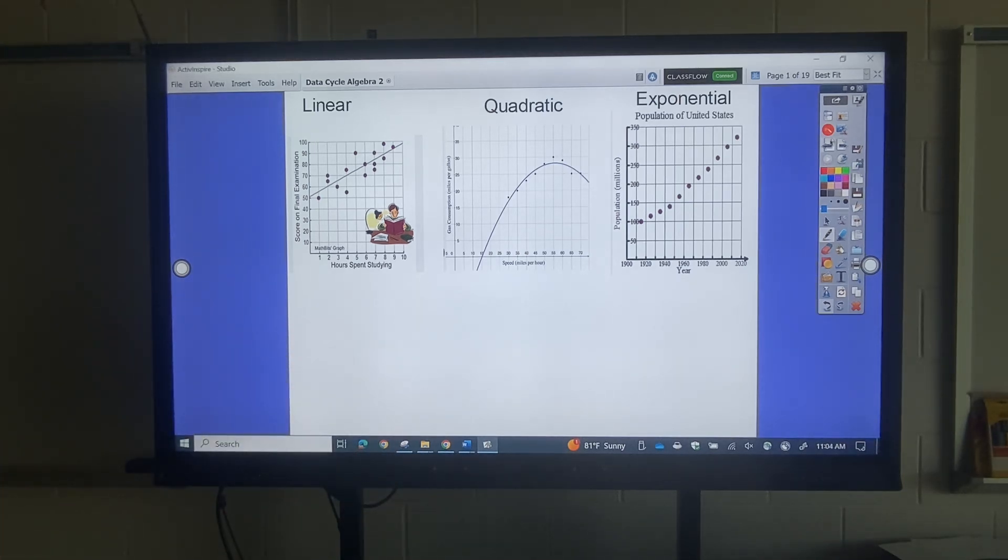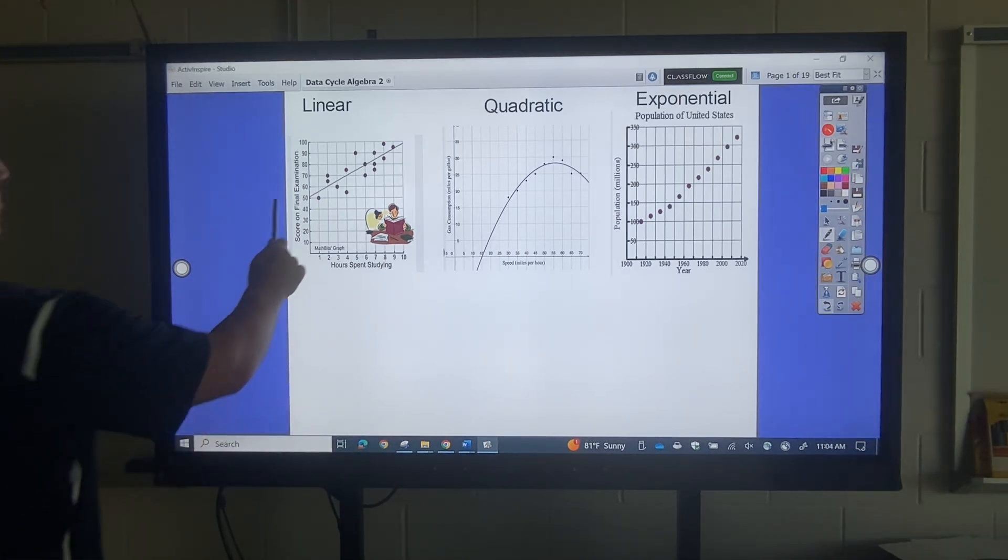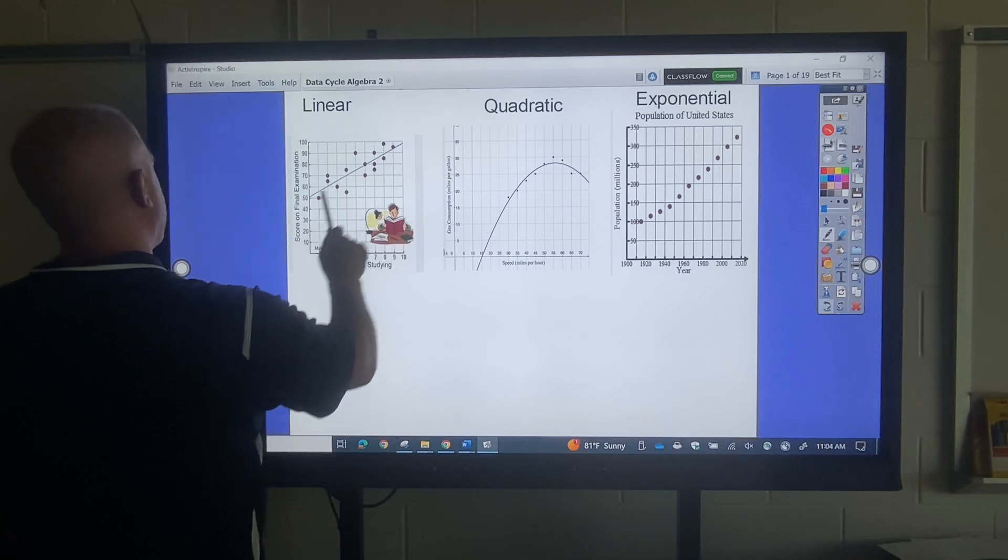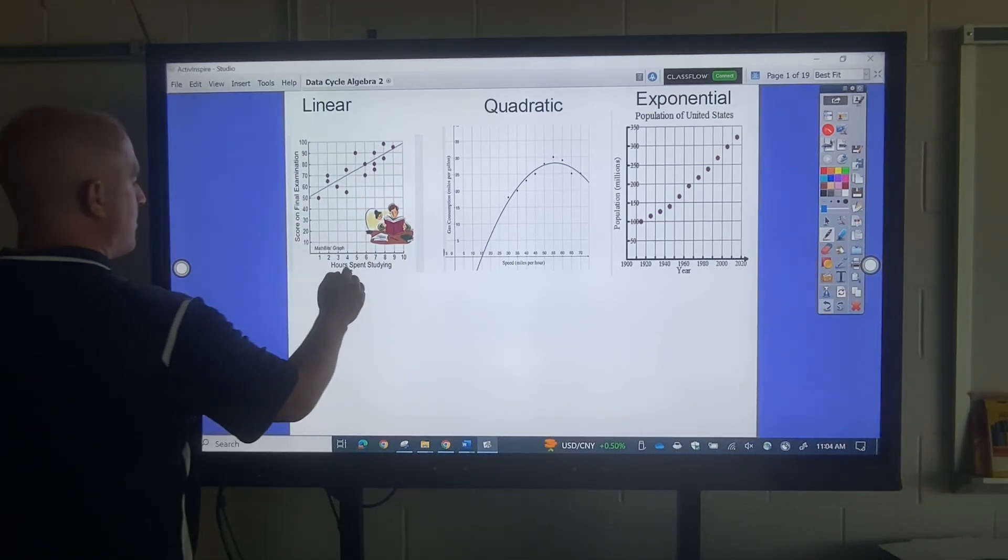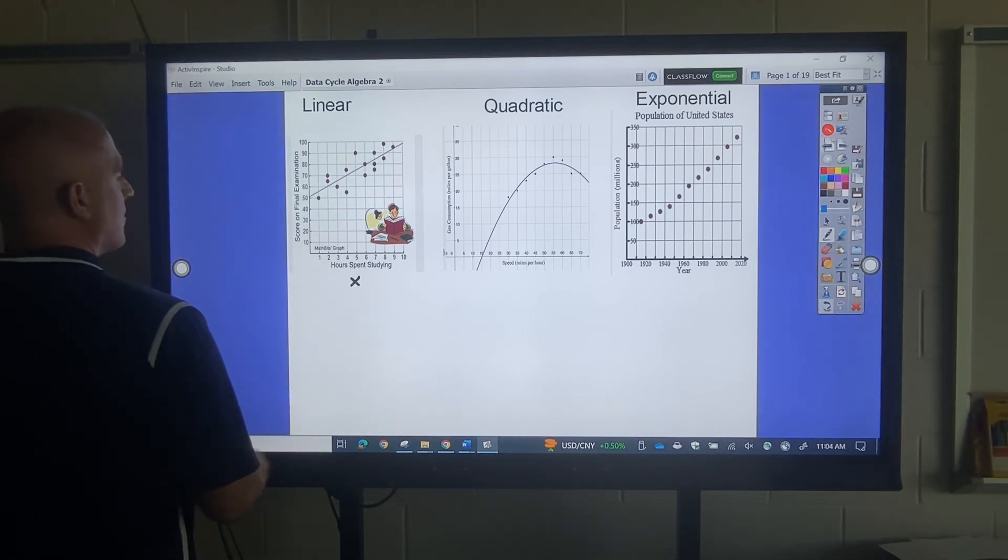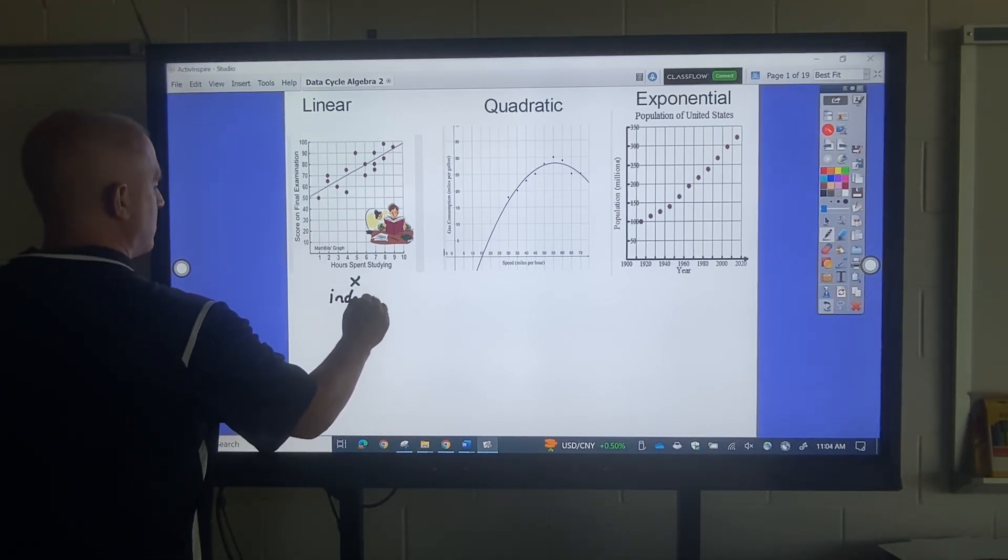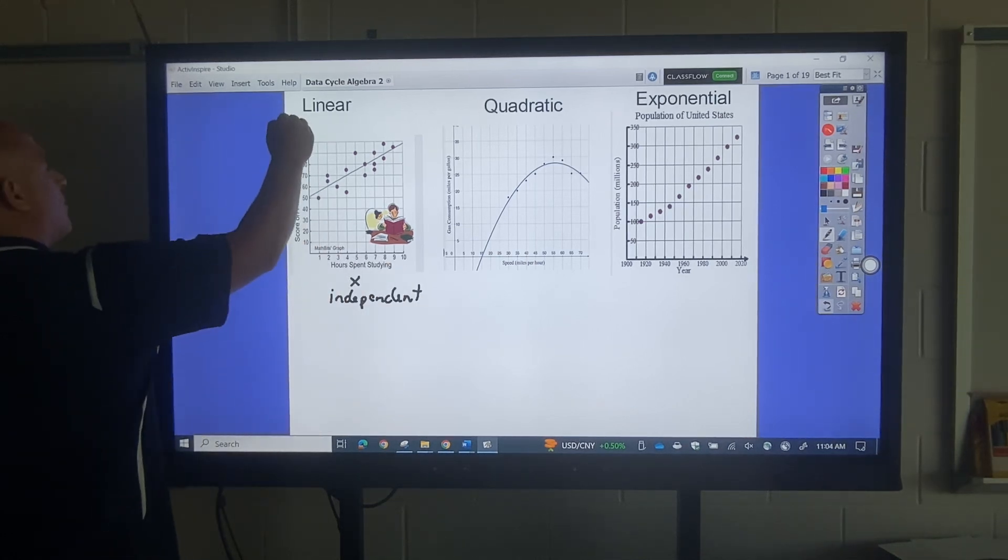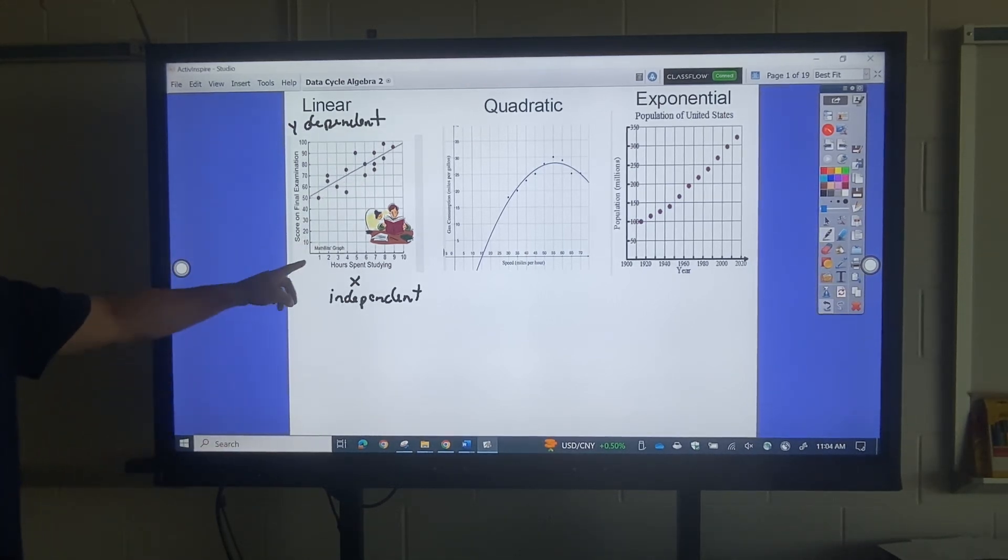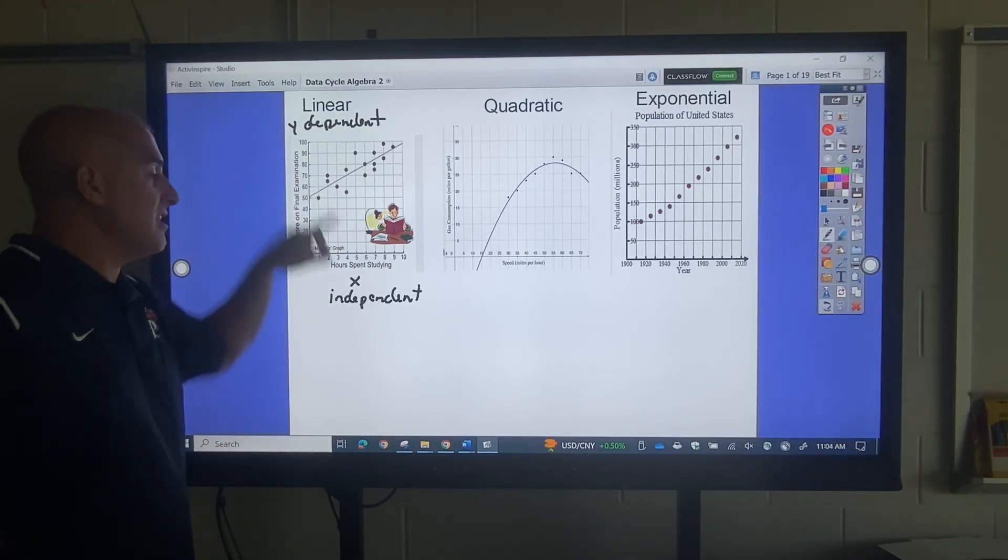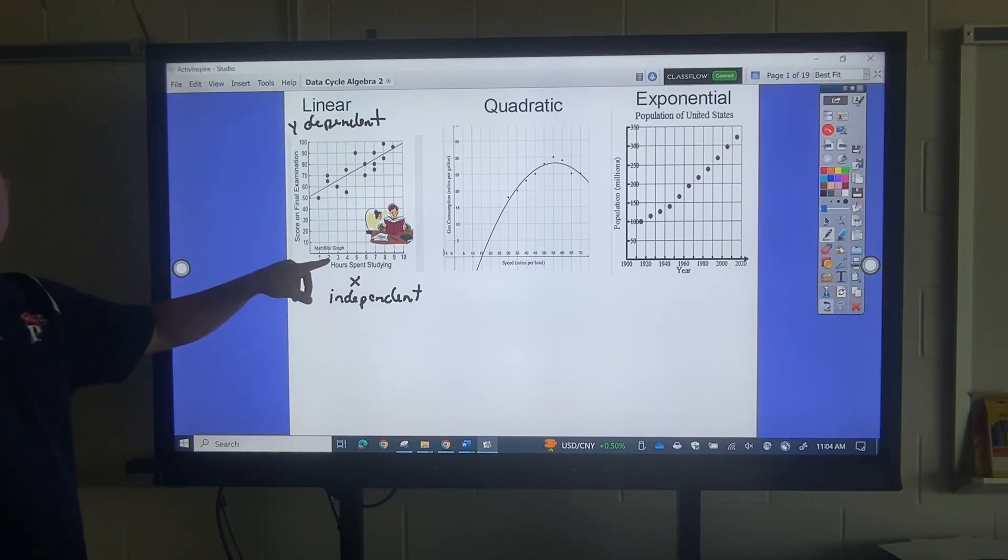Now what that basically means is the more hours spent, the score on your final exam goes up. So this right here, this is your x value, this is your independent variable, and this one, this y right here, that's your dependent variable. And what does that mean? The final exam is dependent on how much you study.